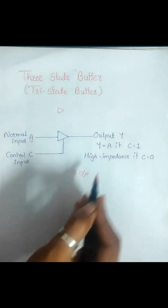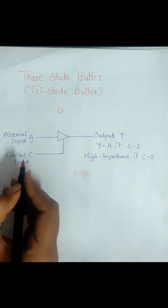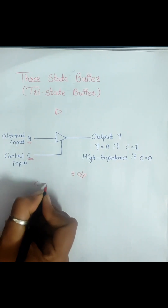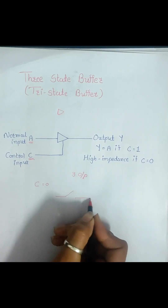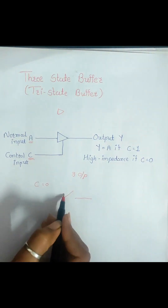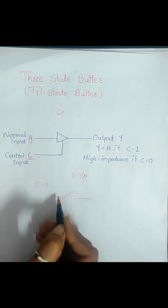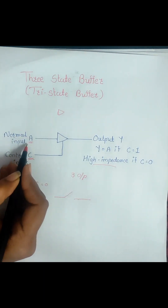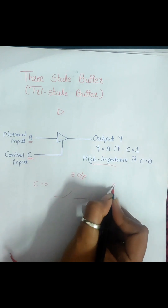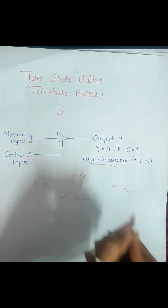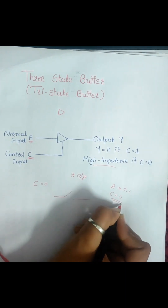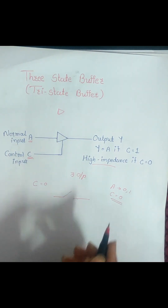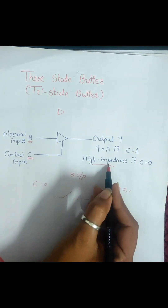You can consider this as a switch where the control is based on the control input C. When control input C is equal to zero, this works as an open switch — there is no connection, so it goes into the high impedance state. Regardless of the value of A, whether zero or one, if C is zero the entire buffer works as an open circuit and the output is high impedance.